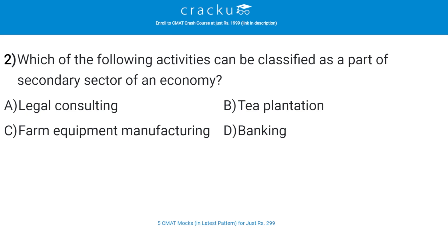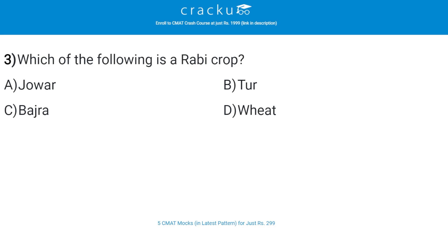Which of the following activities can be classified as a part of the secondary sector of an economy? The correct answer is C — farm equipment manufacturing. The secondary sector includes construction, manufacturing, and processing.